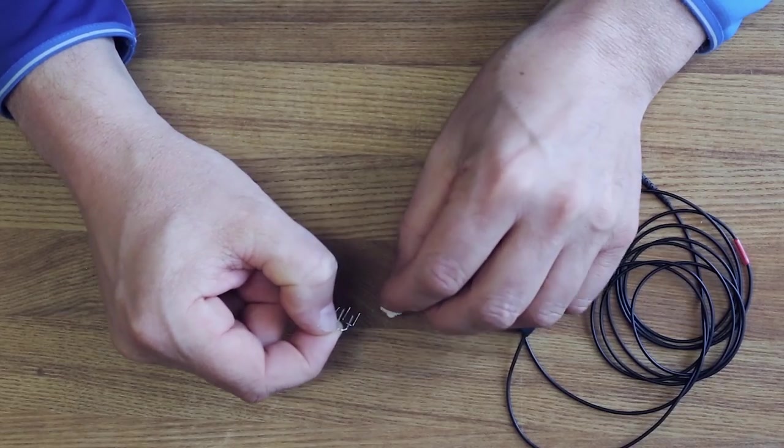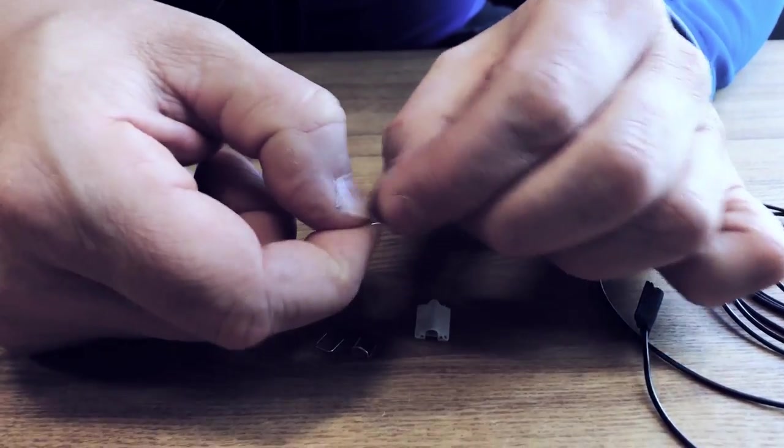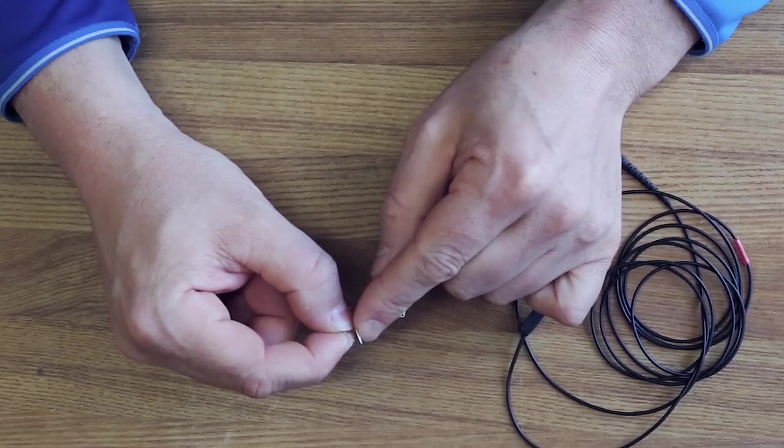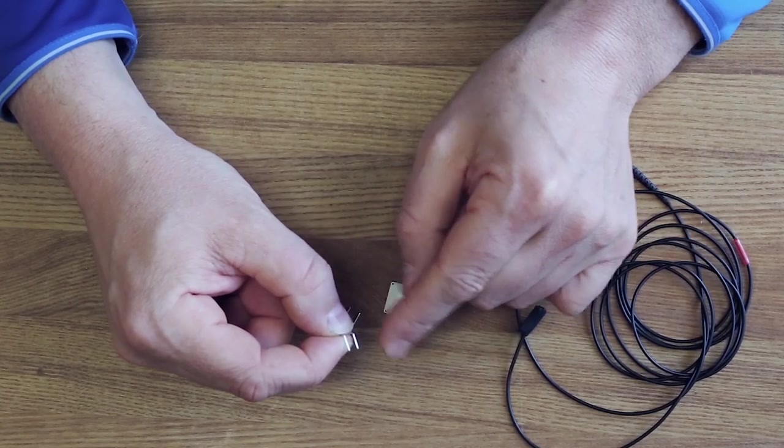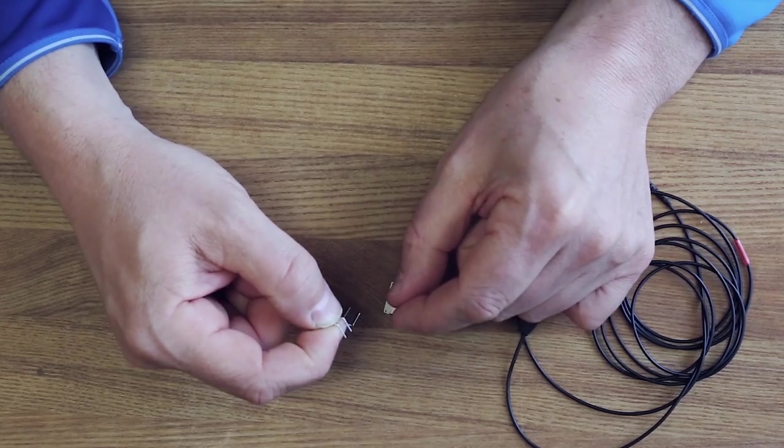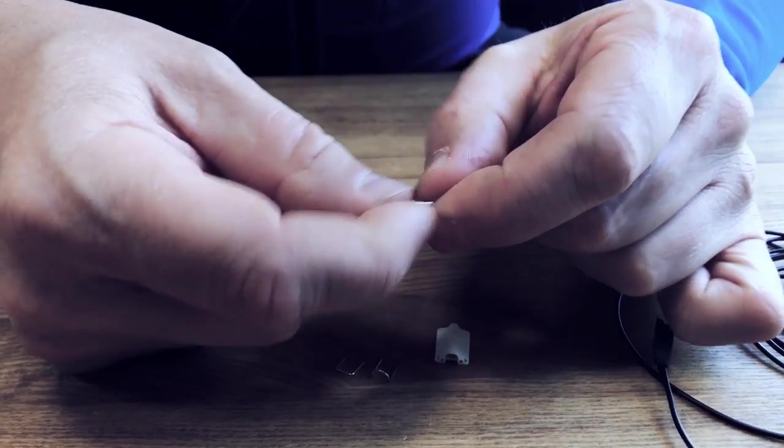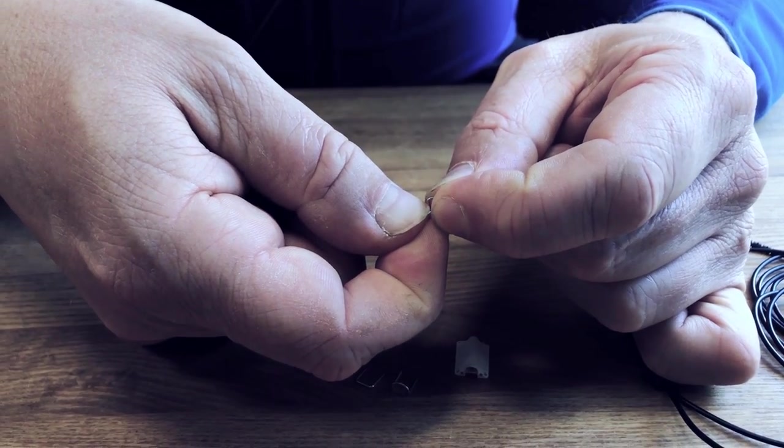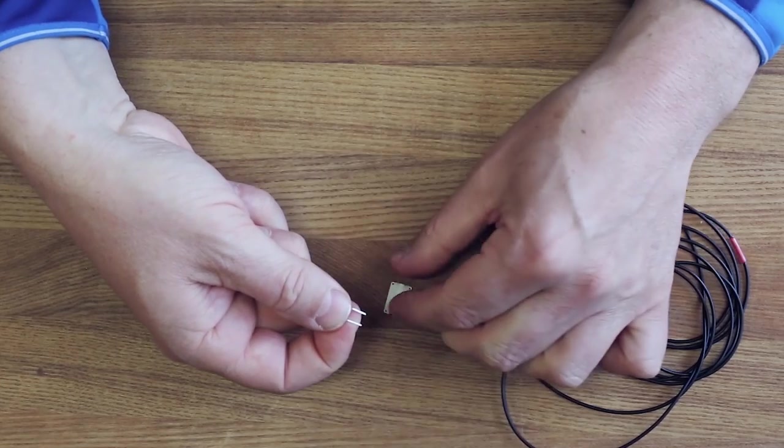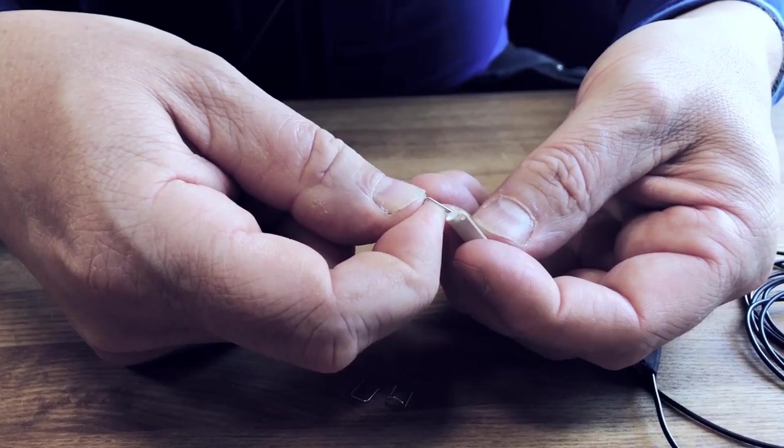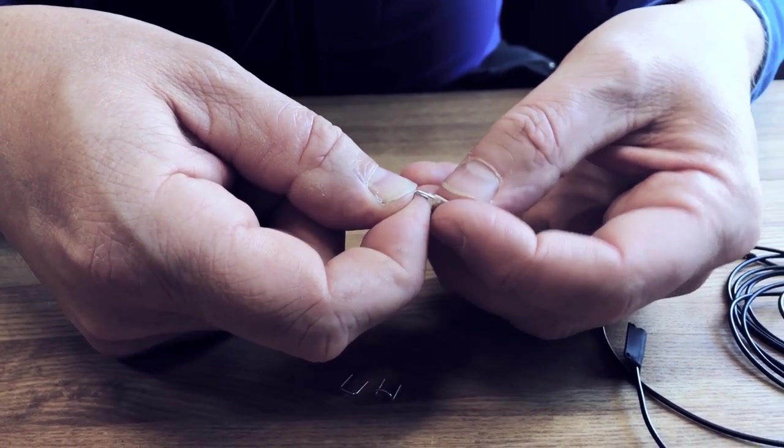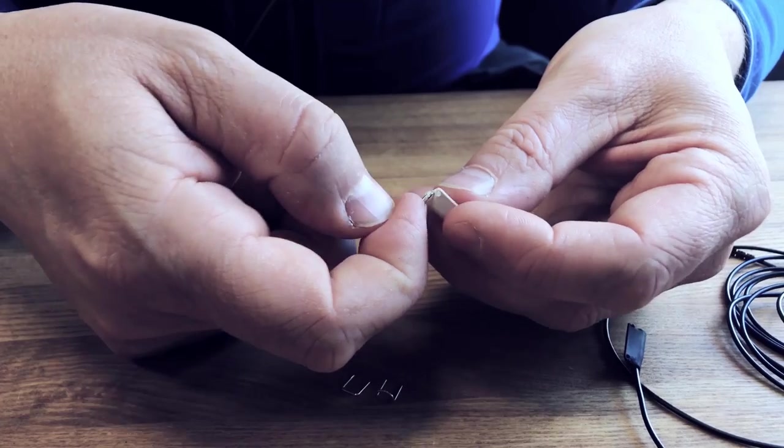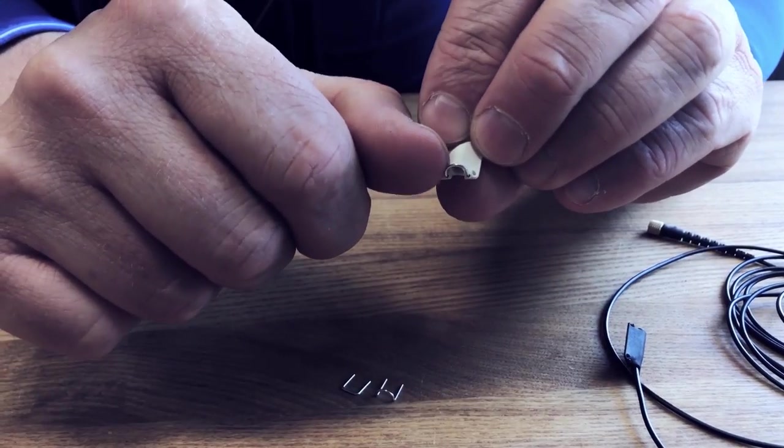We have found out that some of the fabric guards come off a little bit too easy but we have an easy fix for that. You just squeeze the middle part a little bit together like this and then you can insert it in the concealer again and then it will not fall off.